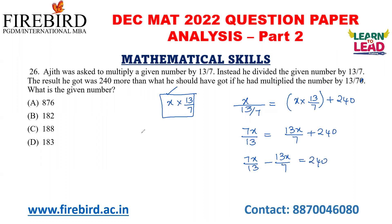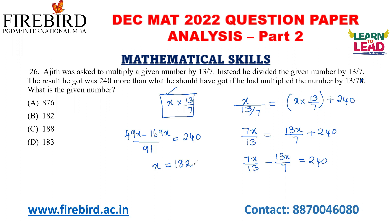Taking the LCM of 13 and 7, which is 91: (49x minus 169x) divided by 91 equals 240, giving minus 120x by 91 equals 240. Solving this, X equals 182. So the given number is 182.